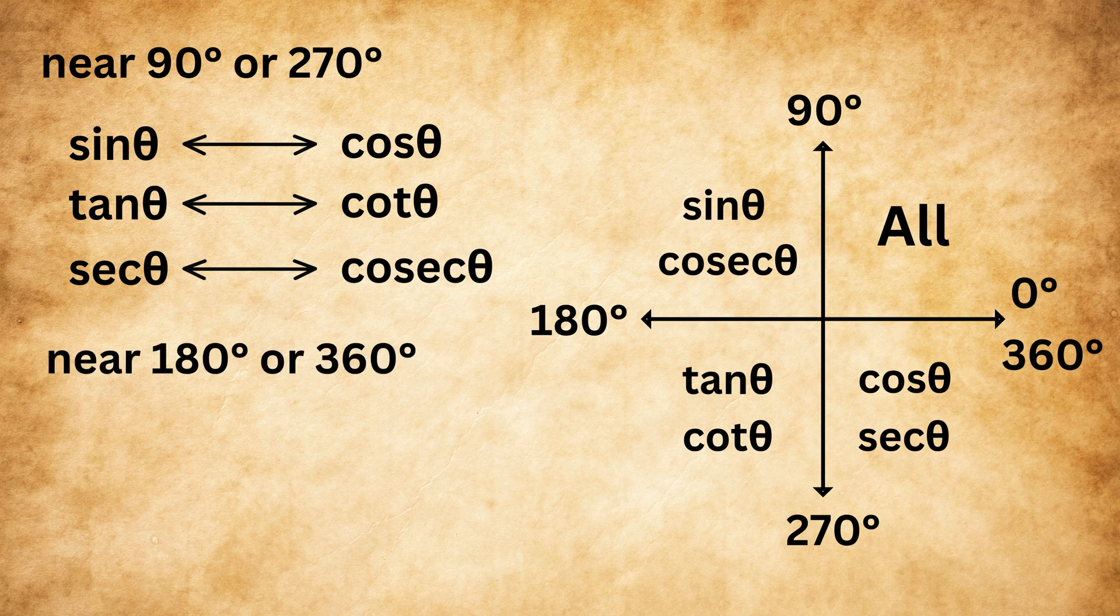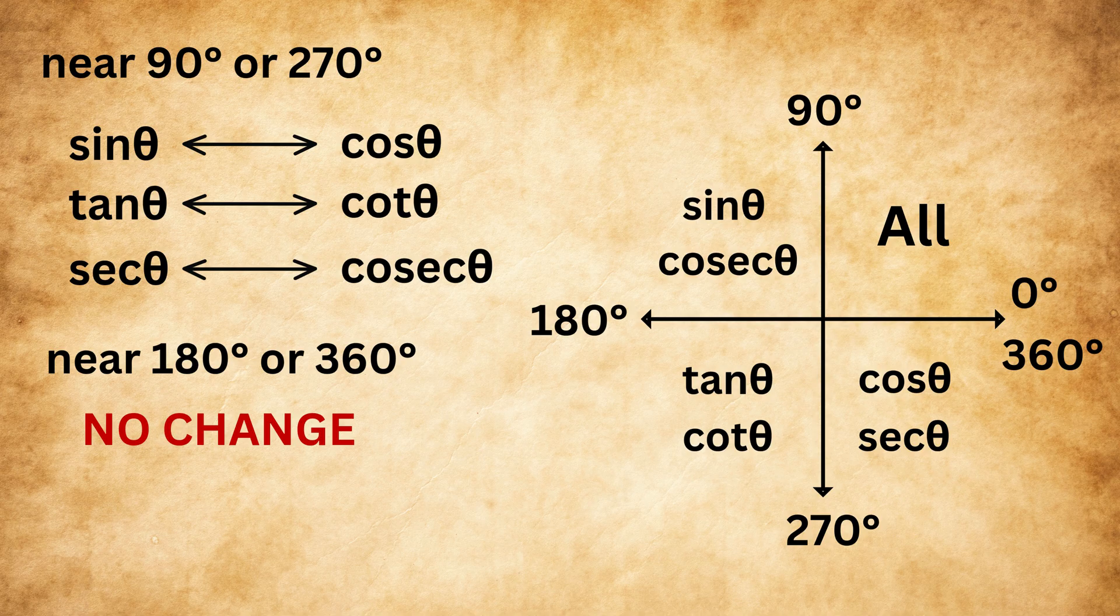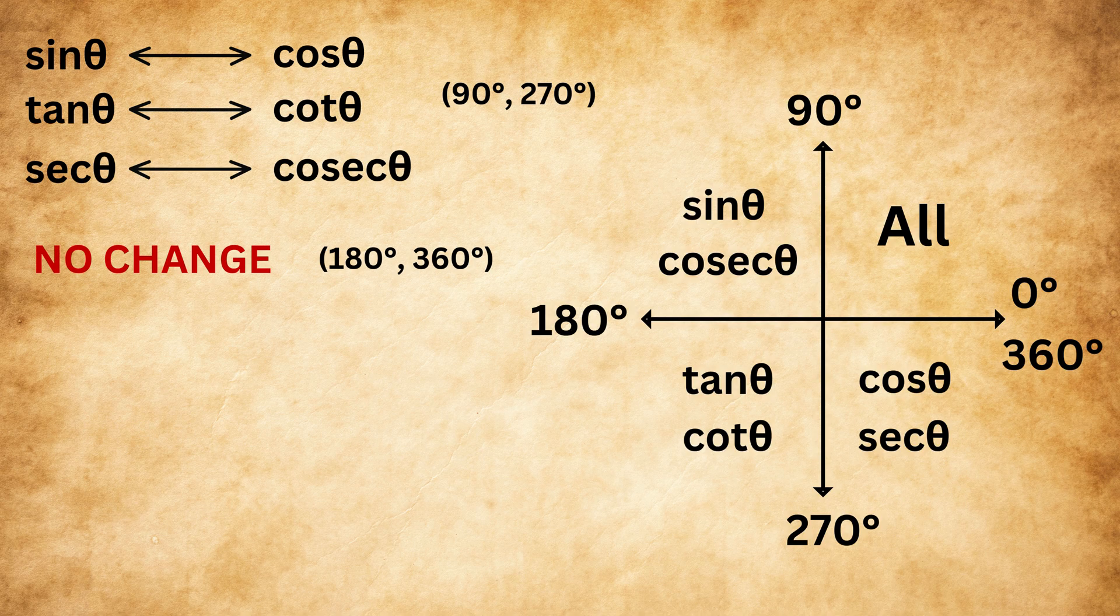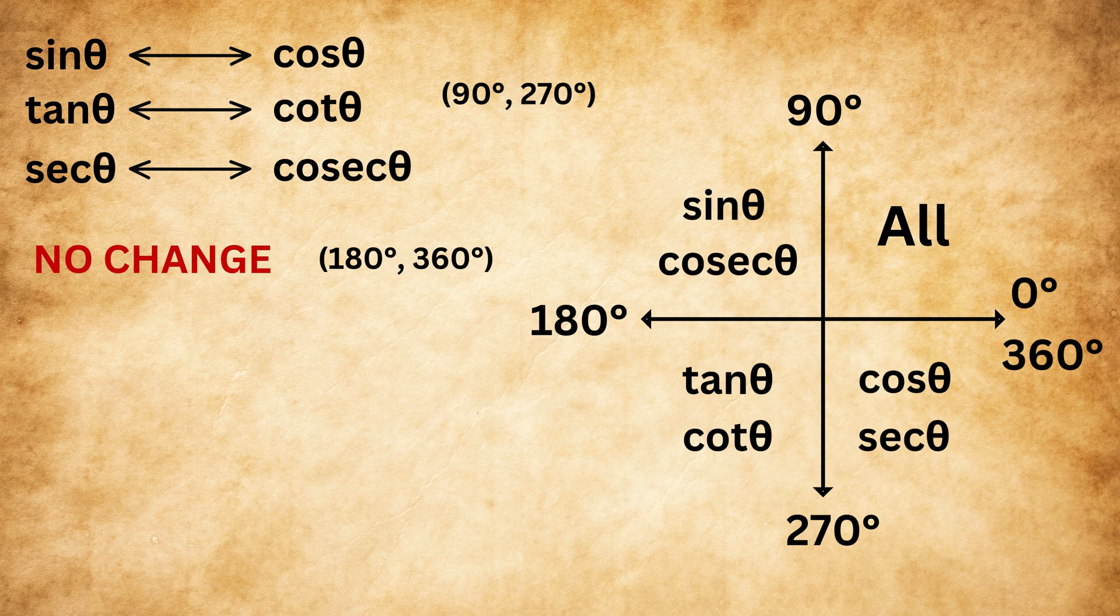For 180 or 360 degrees, the ratio remains the same and does not change its form. Let's understand this with an example.